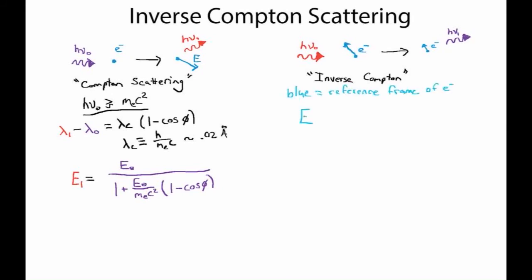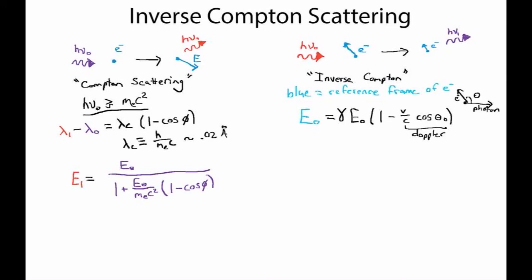In the electron's reference frame, the measured energy of the incoming photon E0 (blue) equals the energy of that photon in the laboratory frame E0 (black) times the Lorentz factor, times a Doppler shift factor depending on what direction the electron is moving — giving a 1 minus v over c cosine theta_0 term, where theta_0 is the angle between the direction the electron is moving and the direction of the incoming photon.